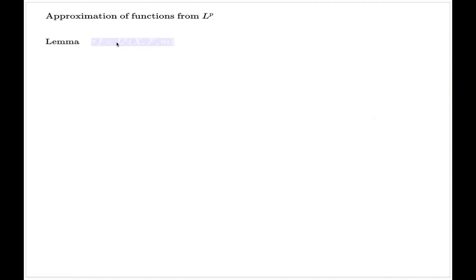So the lemma which I want to discuss with you sounds like this: For every function f which is p-summable, for p greater or equal to 1, and for every epsilon positive, there is a function g which will be also p-summable and at the same time essentially bounded.